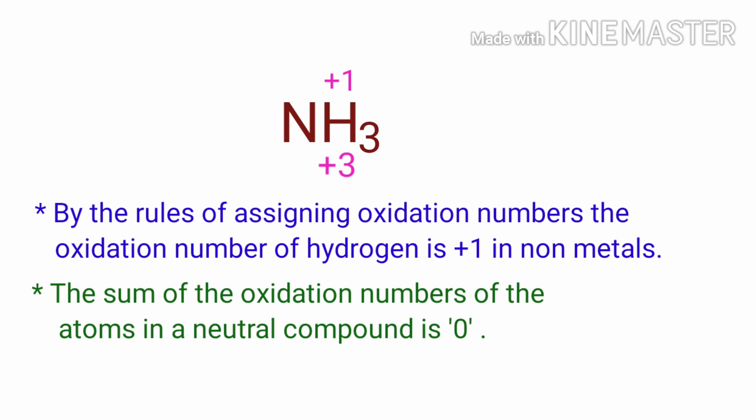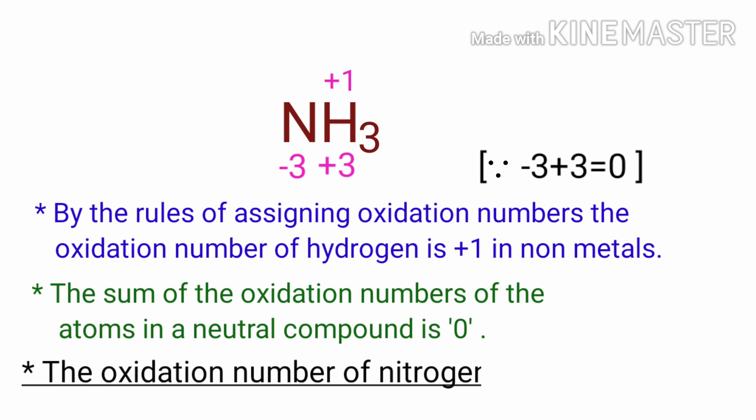As per the rule, in a neutral compound the numbers along the bottom must add up to zero. So the number under N must be minus three. Therefore, the oxidation number of nitrogen in ammonia is minus three.